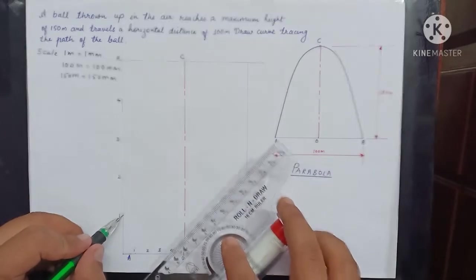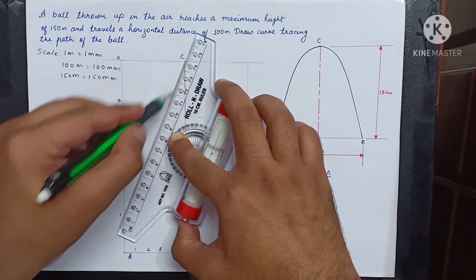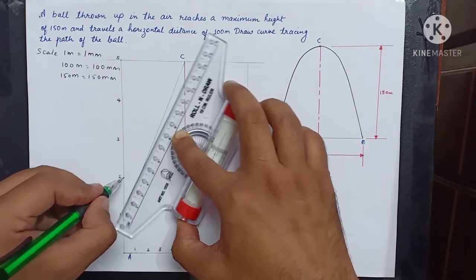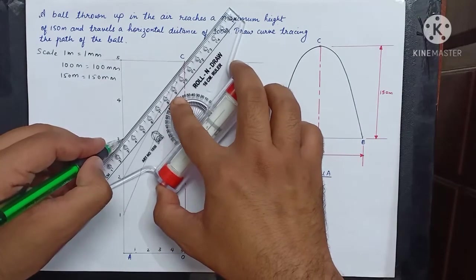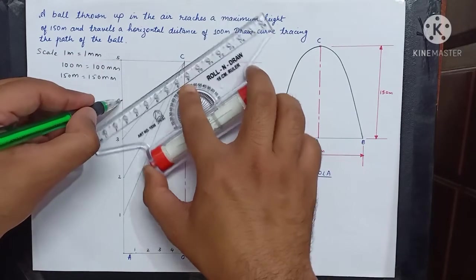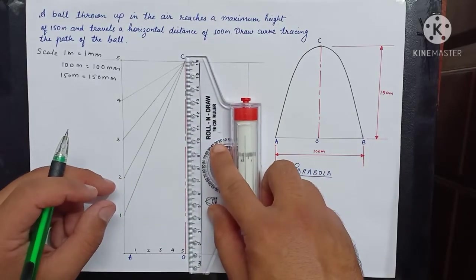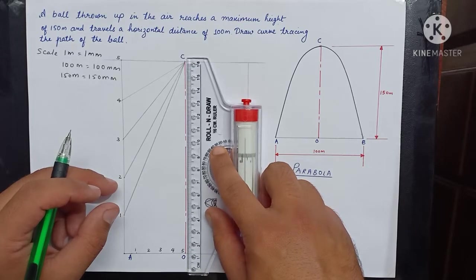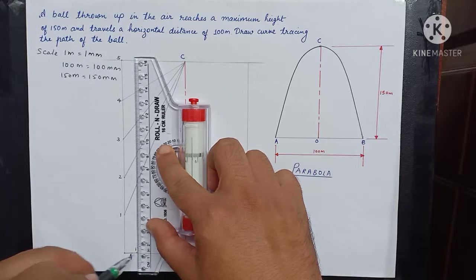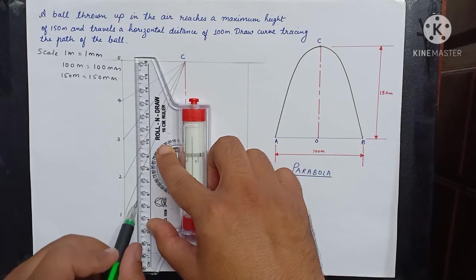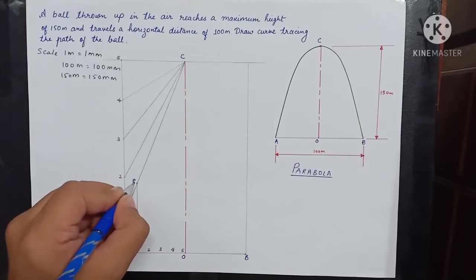Now we connect point number one, which is on the vertical line, with C. Then we connect point number two with C. Three and four. Now match the ruler scale with the axis. Slide it till point one which is on the horizontal line and draw a vertical line which will meet at line number one. This will give point P1.